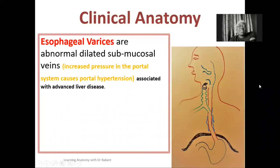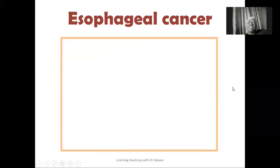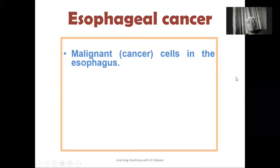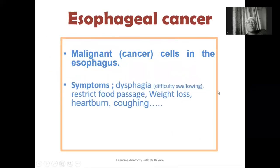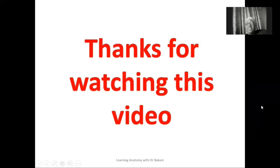For clinical anatomy: oesophageal varices is an abnormal dilation of the submucosal veins in the oesophagus, occurring as a result of increased pressure in the portal drainage of the liver. It is associated with advanced liver disease and is predisposed to bleeding, which may present as vomiting of blood. Oesophageal cancer involves cancerous cells developing within the oesophagus. Symptoms include dysphagia — difficulty swallowing — restricted food passage, weight loss, heartburn, and coughing. Treatment options include surgery, chemotherapy, or radiation.